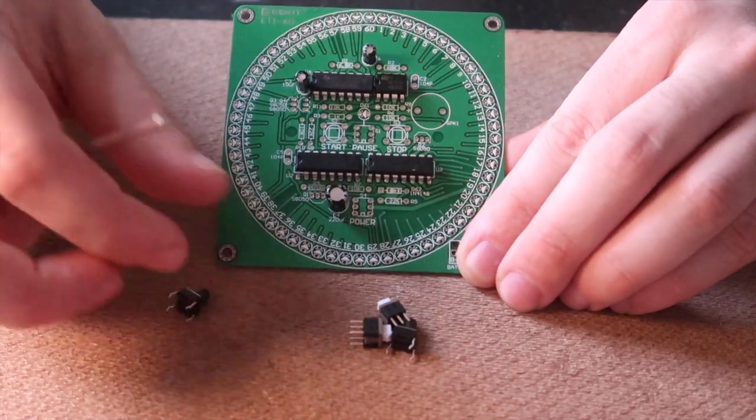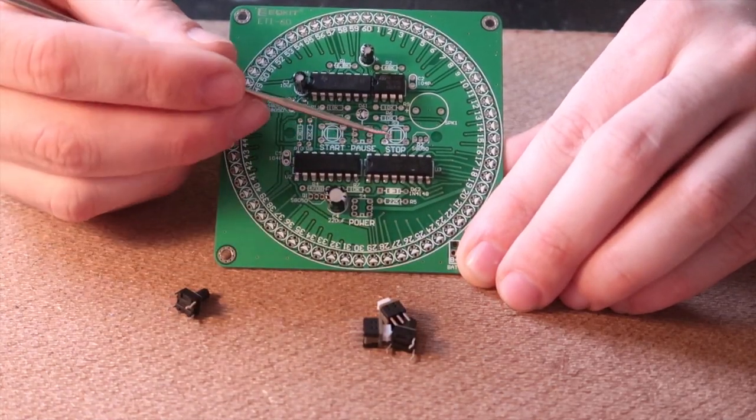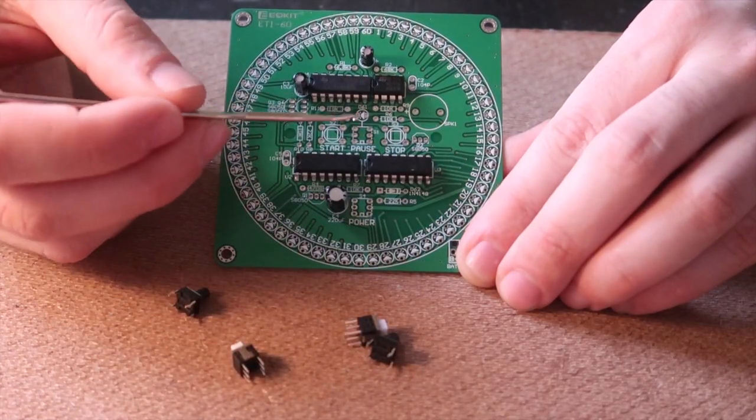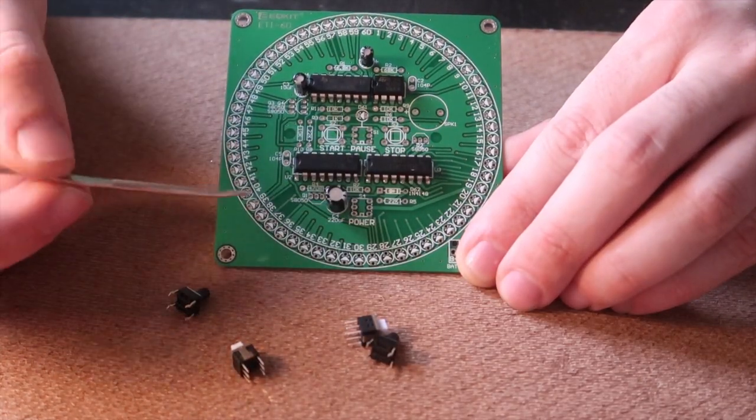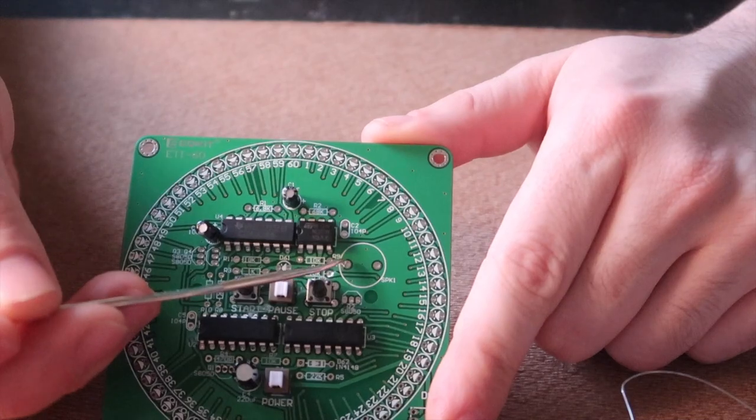The two black buttons are going to go in the start and stop location and the two white buttons will go in the pause and power position. Then the buzzer, the positive side over here.